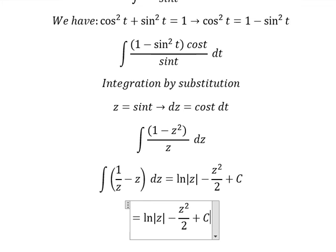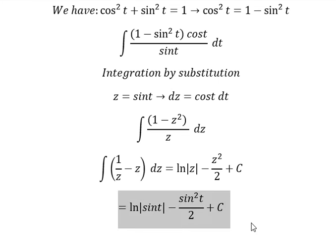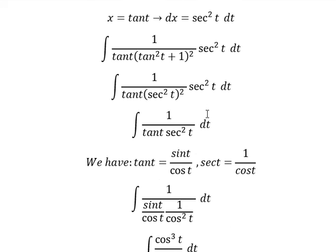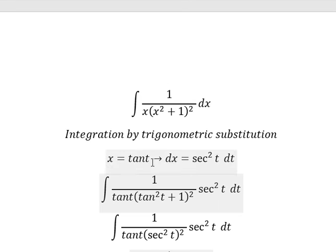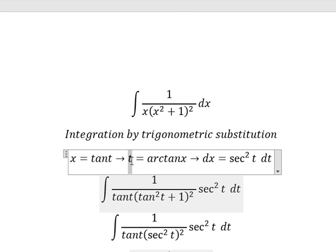About z, that is sin t. About t, that is arctan x, so we have t equal to arctan of x. So we need to change t into this one.